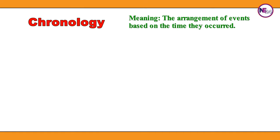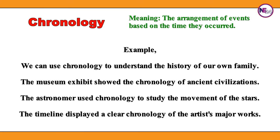Chronology: the arrangement of events based on the time they occurred. We can use chronology to understand the history of our own family. The museum exhibit showed the chronology of ancient civilizations. The astronomer used chronology to study the movement of the stars. The timeline displayed a clear chronology of the artist's major works.